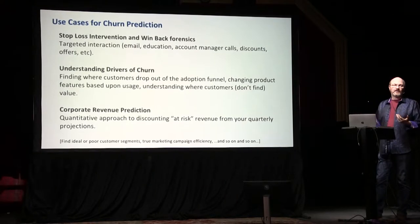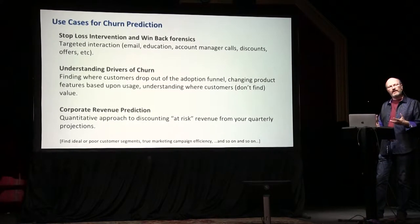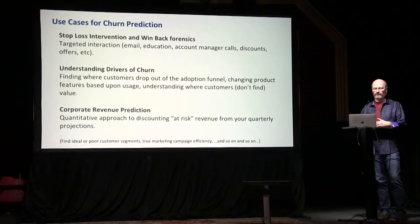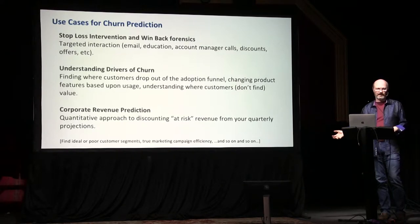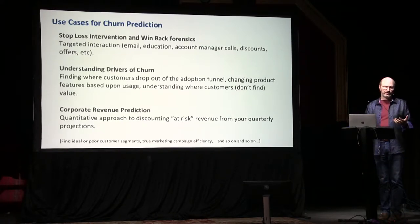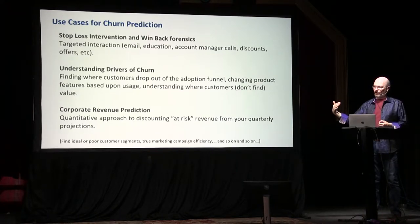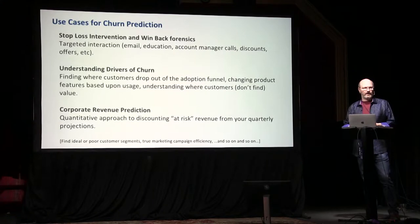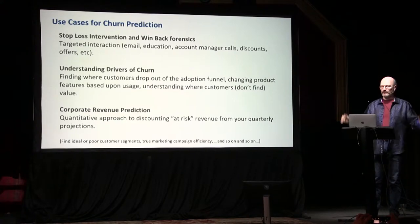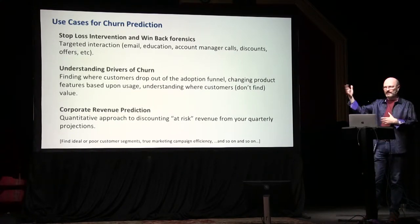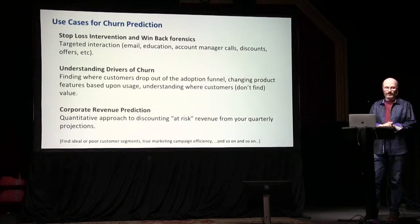Another thing that came out of selling churn prediction in the field was finding an ideal customer segment. If you look at all your customers in the green — likely to renew — you can start looking at those segments. I remember one of our customers: when we ran churn prediction on their portfolio of SMB, they noticed that people in manufacturing were much more likely to stay with them. That insight didn't come out of their product analytics or marketing segmentation — it came out of the churn prediction naturally, and they focused their whole sales efforts on that segment by changing the incentives of the sales structure.